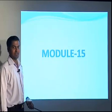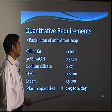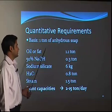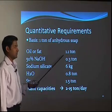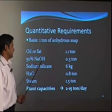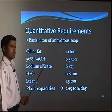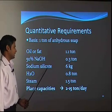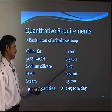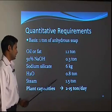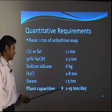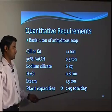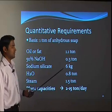Dear students, welcome back to chemical technology. If you are producing 1 ton of iron soap, then we require oil and fat around 1.1 ton, sodium hydroxide which is caustic 50 percent around 0.3 ton, sodium silicate as filler 6 kg, water 0.8 tons, steam around 1.5 tons. Generally the plant capacity varies from 2 to 15 tons a day for soap manufacturing.